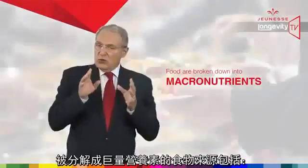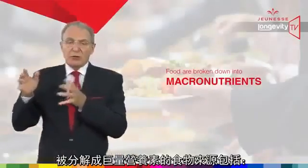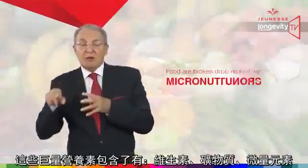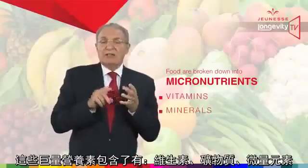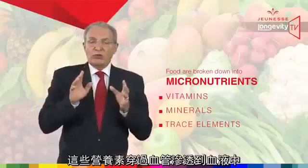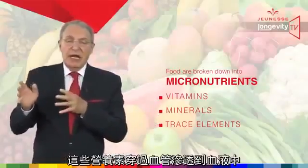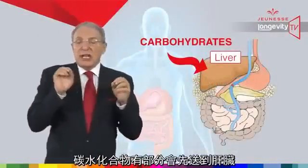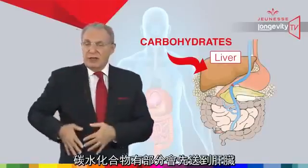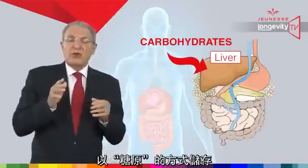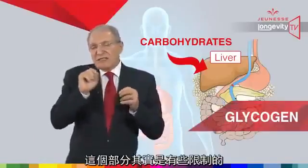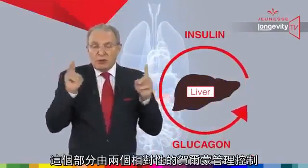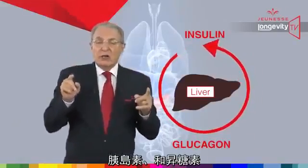So what happens when we eat food in terms of energy? Food is broken down into macronutrients — which are basically protein, fat, and carbohydrates — and into micronutrients, which are vitamins, minerals, and trace elements. All those nutrients cross the intestinal barrier and go into the blood. Carbohydrates are first stored in small storage places in the liver in the form of glycogen, but the space is limited. All of this is controlled by a couple of opposite hormones called insulin and glucagon.